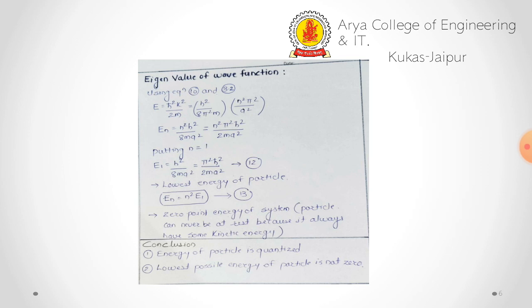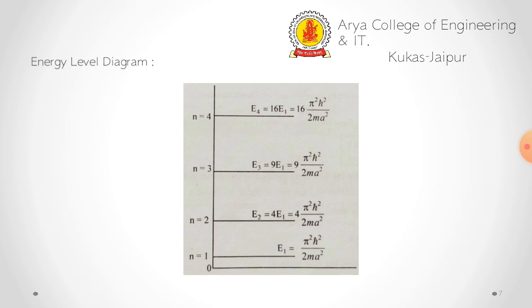In conclusion: the energy of the particle is quantized, meaning the energy increases in a step-by-step manner, not continuously. Second, the lowest possible energy of the particle is not zero. The energy level diagram can be drawn using this energy equation — for n = 1 we get the lowest energy E₁, for n = 2 we get E₂, for n = 3 we get E₃, and so on.